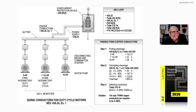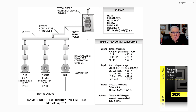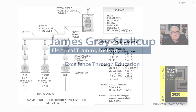Figure 18-11 simply demonstrates determining the conductor size for a feeder supplying duty-cycle-related motors along with a motor that has no duty cycle. This is the method used under these conditions.